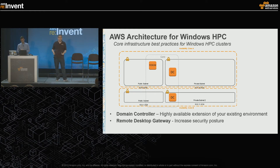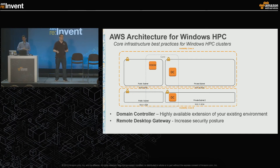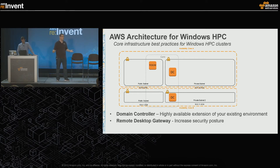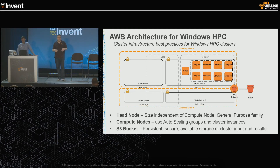For core infrastructure, you'll have a bastion host or Remote Desktop Gateway. In the Windows space, using Remote Desktop Gateway gives you an HTTPS proxy for secure access to Windows machines inside a VPC without anything going public over the internet. For domain controllers, best practice is having one domain controller per availability zone, using Active Directory multi-site topologies for high availability managed both by AWS and Microsoft Active Directory.